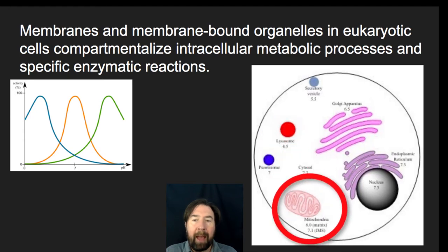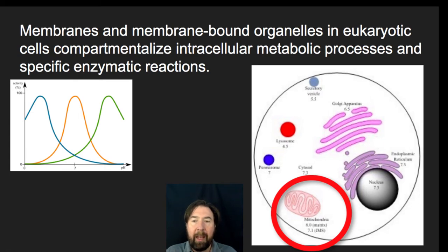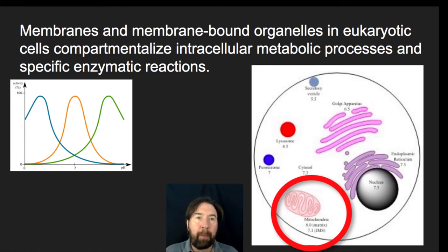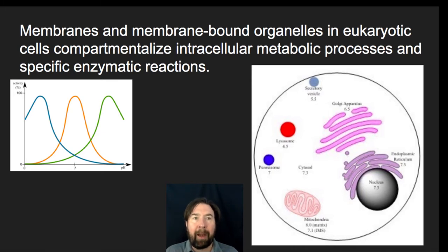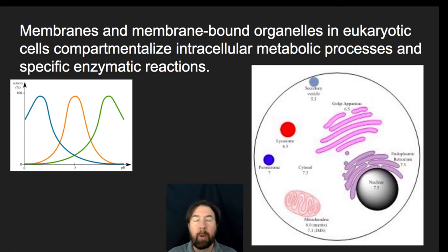Similarly, the mitochondria have a pH gradient where the matrix has a pH of 8 but the intermembrane space is 7.1. There's actually a difference in hydrogen concentration — more acidic in the intermembrane space and more basic in the matrix — creating two separate environments separated by a membrane. Membranes allow us to isolate sets of reactions or conditions that will be optimal for whatever function takes place in that area. That is really the major point of compartmentalization: allowing specific locations with different environments and different functions, so the cell can work cooperatively and cohesively to accomplish all of its functions.